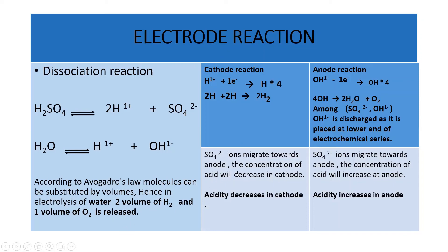Now let's move on to the observations. The observation at the cathode: SO4²- migrates towards the anode, so acidity decreases at the cathode. As SO4²- migrates towards the anode, the concentration increases there, so acidity increases at the anode. This is the main observation asked during the electrolysis of acidified water.